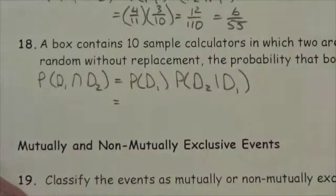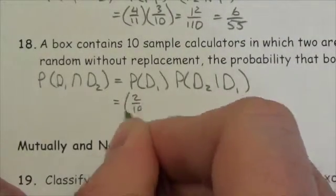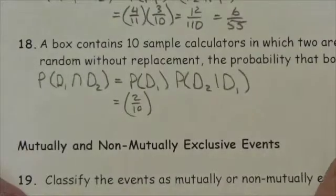Now, there are two defective calculators out of a total of 10, so the probability that the first one is defective is 2 out of 10.